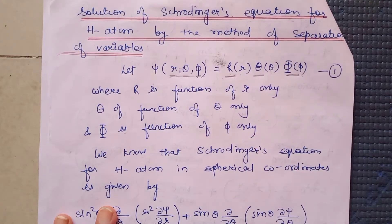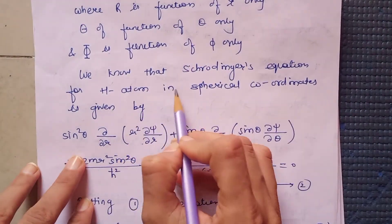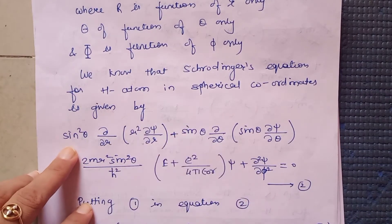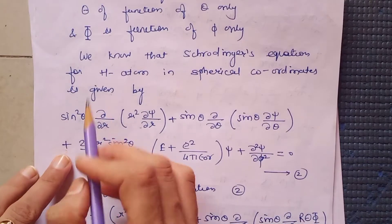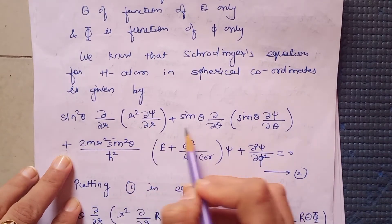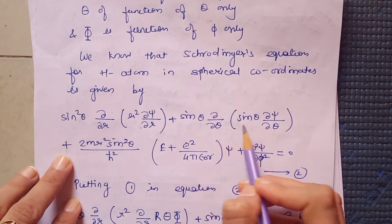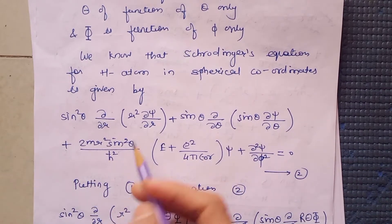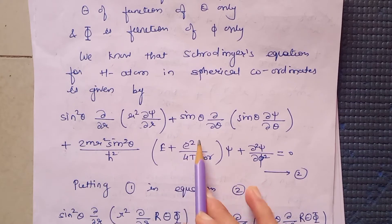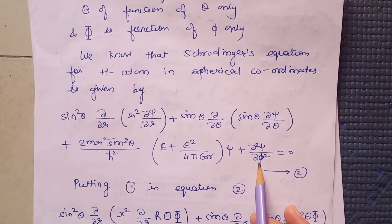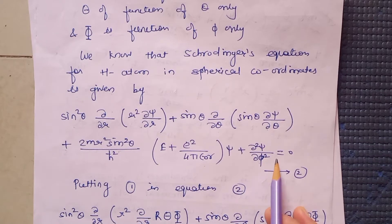We know that Schrödinger's equation for hydrogen atom in spherical coordinates — which we framed last time — is given by: sin²θ · ∂/∂r(r² ∂ψ/∂r) + sinθ · ∂/∂θ(sinθ · ∂ψ/∂θ) + (2mr²sin²θ/ℏ²)(E + e²/4πε₀r)ψ + ∂²ψ/∂φ² = 0.